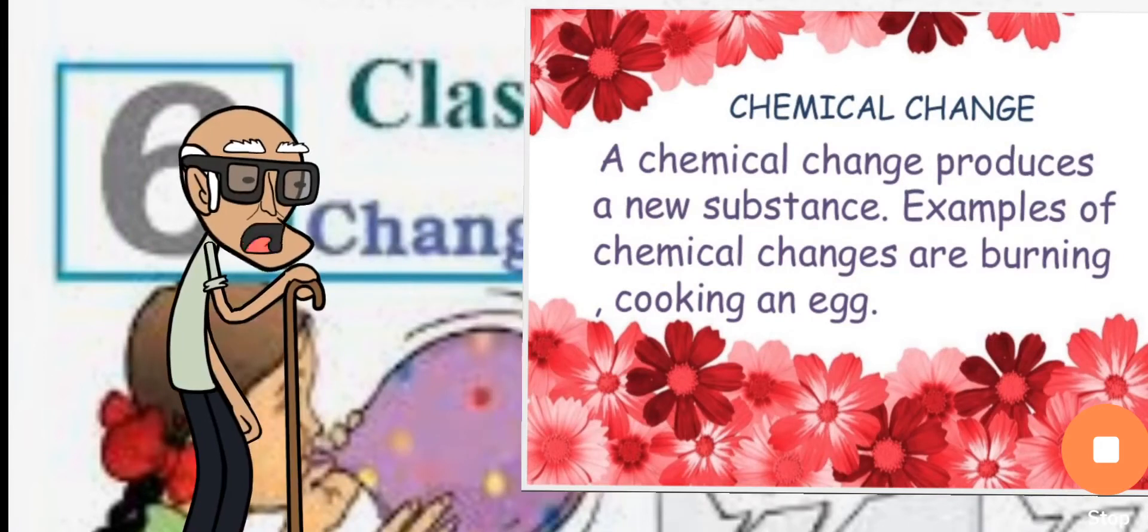Third is chemical change. A chemical change produces a new substance. Examples of chemical change are burning, cooking an egg as you can see.